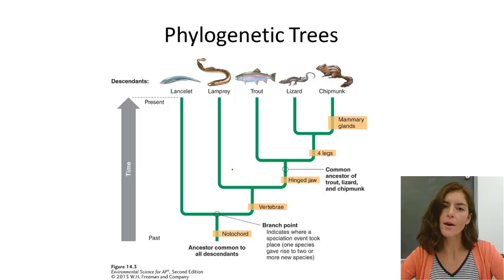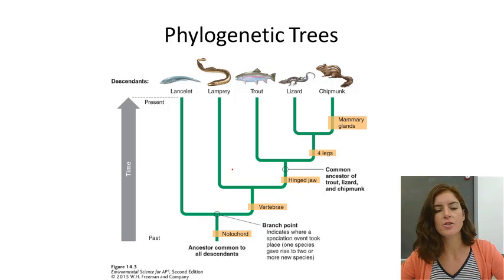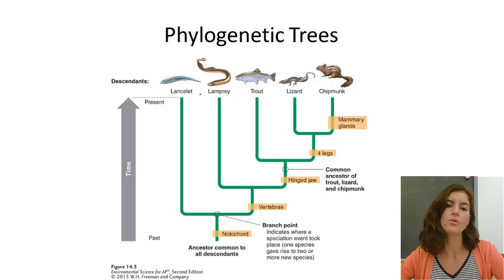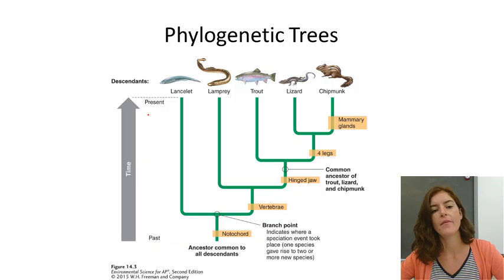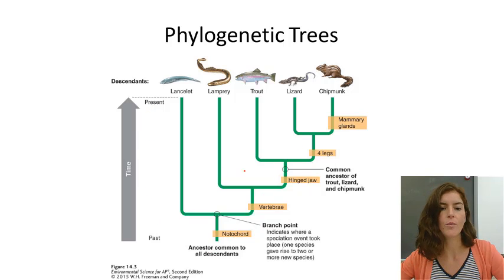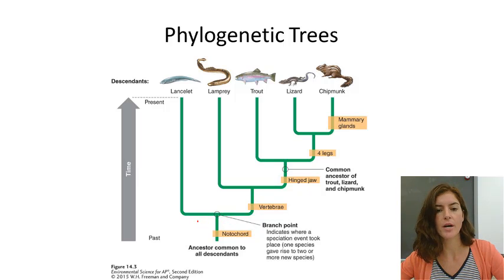Phylogenetic trees — the way you read one is to look at the last organisms on the tree, which are the organisms that exist today, current living species. You're looking through time, where back in time we have a less diverse population, going to our current population. All these different organisms share a common ancestor, and then we have a branch point. That branch point indicates where speciation occurred — one species gave rise to a new one.